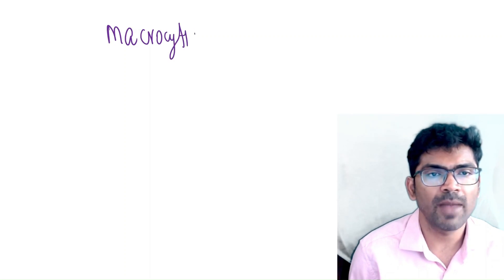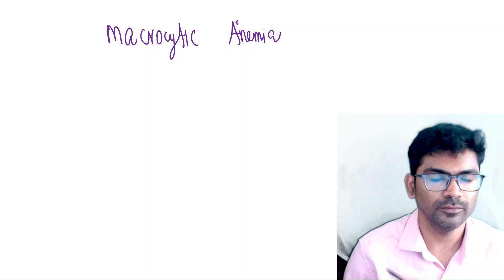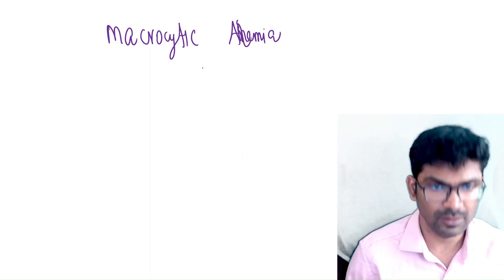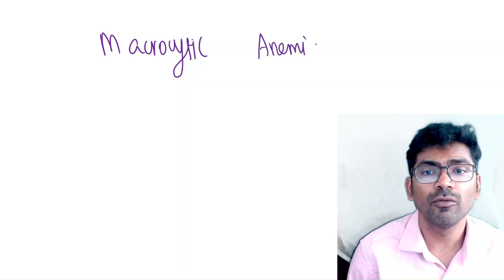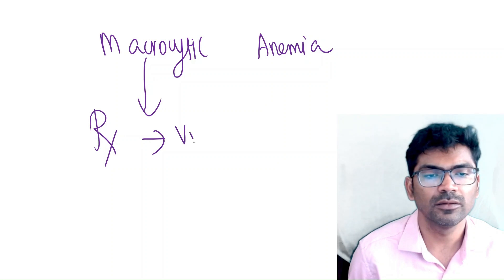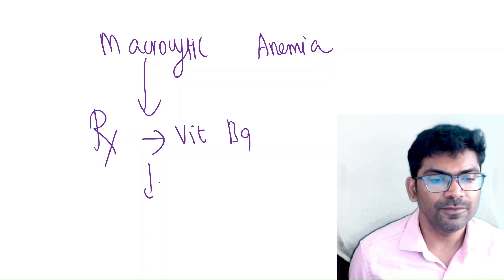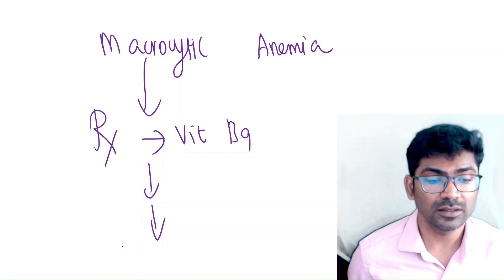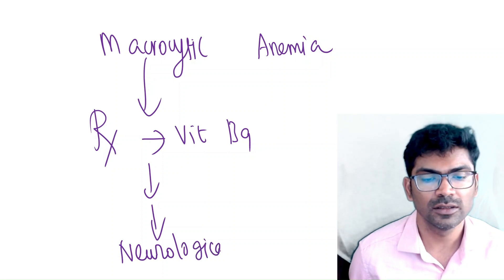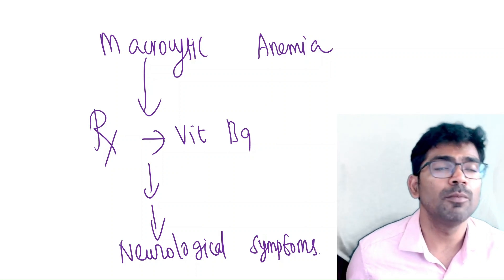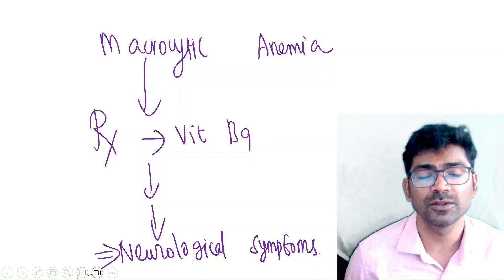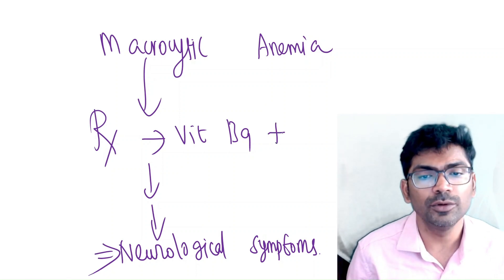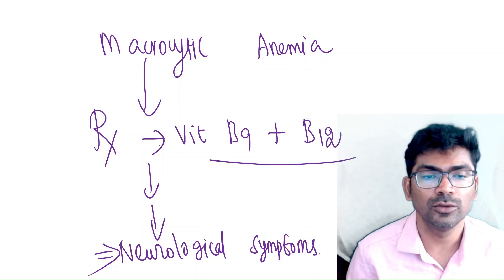Now for the clinical application: when treating a patient of macrocytic anemia — which is due to folic acid deficiency — you treat with vitamin B9 (folate). But after a few months or years, the patient may present with neurological symptoms like subacute combined degeneration of the cord. This happens because vitamin B12 was not added to the treatment regimen.